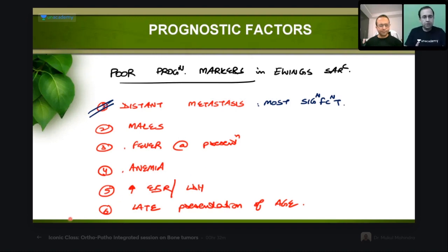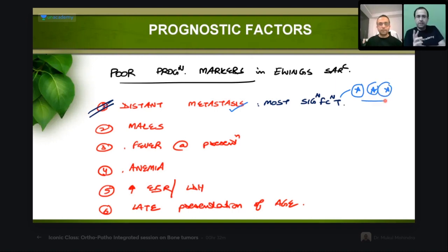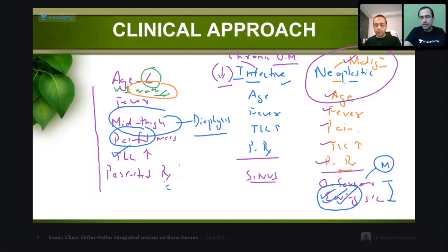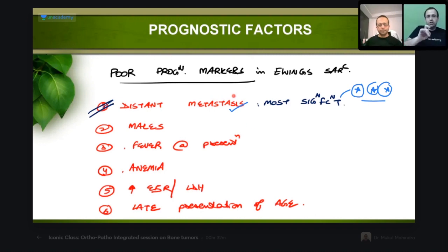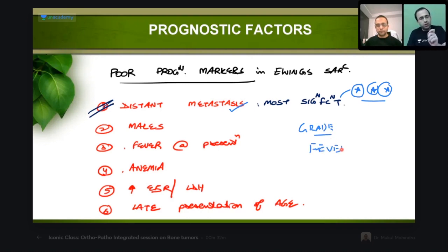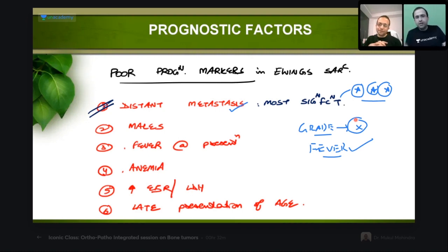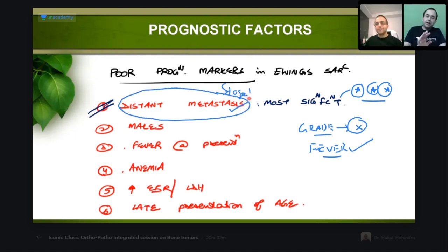Coming to the poor prognostic markers in Ewing's sarcoma — that was actually the question. Poor prognostic markers are: distant metastasis, males, fever at presentation, anemia, increased ESR, and late presentation or older age. Out of these, the most significant poor prognostic marker is distant metastasis. However, in this question option three — fever at presentation — was asked. Ewing's sarcoma is a high-grade tumor only; we do not talk of a low-grade Ewing's. Some students confused grading with staging. If staging were asked, distant metastasis would be most significant. The answer was option three: fever.